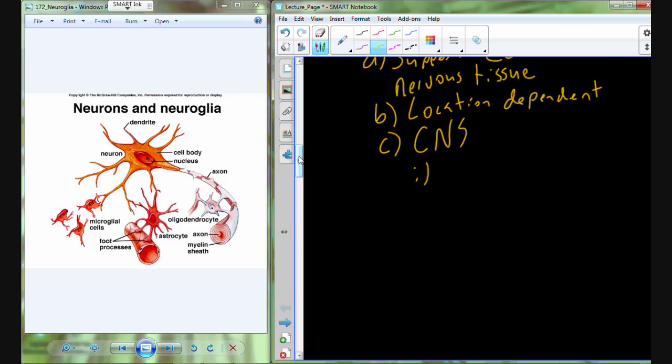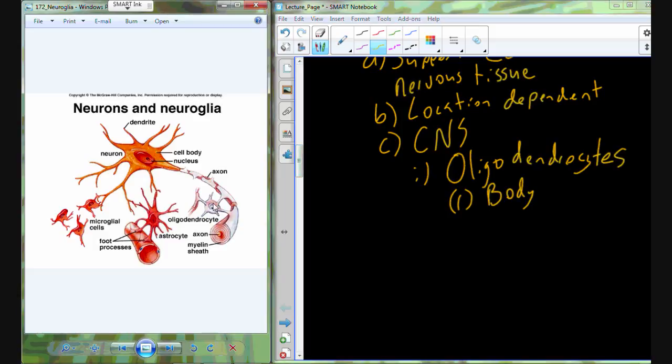Within the central nervous system, you can see here that this is our neuron, and then we have a bunch of different examples of neuroglia here, and these are going to be the typical of the neuroglia that we find in the central nervous system. One of those is the oligodendrocyte. So the oligodendrocytes, these are going to be neuroglia that have a body, a main part of the cell, but then they have these arm-like projections.